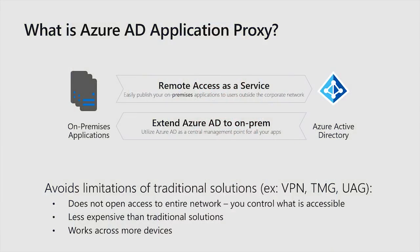For example, it doesn't open the entire network. You're selectively publishing the resources you want your users to have access to. It's less expensive than traditional solutions, and it works across more devices — your desktop, your mobile devices, etc.